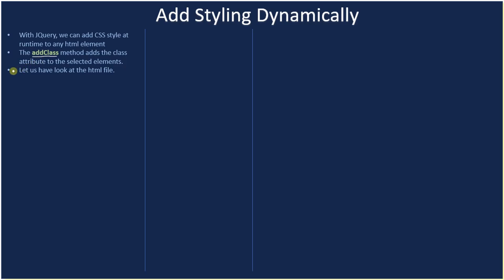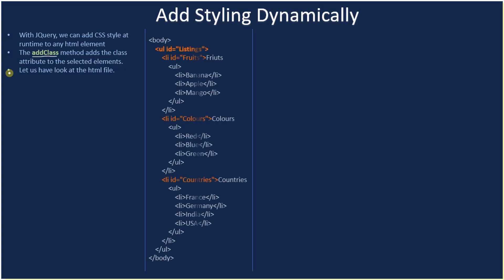Let's have a look at the HTML file so you get a clear picture of how we are using addClass dynamically on one or more elements selected by the dollar function. Here we have the HTML body, and inside it is simply a UL (unordered list) tag. We have three list items: ID equal to 'fruits', ID equal to 'colors', and ID equal to 'countries'.